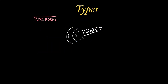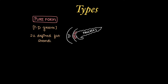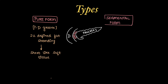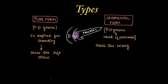Coming to types of groove pancreatitis: there is the pure form, as shown in the case previously, which occurs only in the pancreaticoduodenal groove, ranging from ill-defined fat stranding to a sheet-like soft tissue density in the PD groove. Then there is the segmental form, which involves the pancreaticoduodenal groove but also extends to the head of the pancreas, and can present as mass-like enlargement of the head of the pancreas.